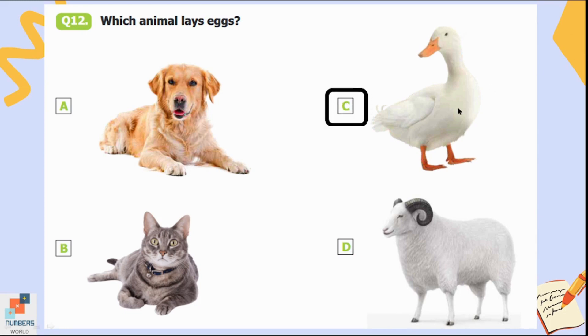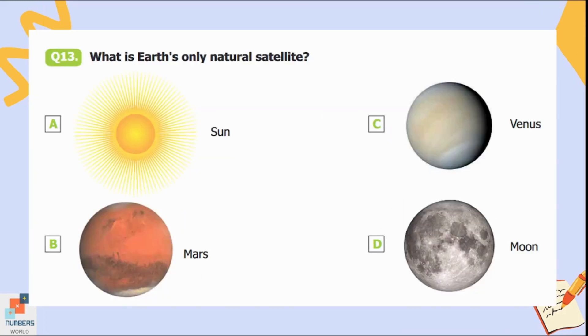Question number thirteen: What is Earth's only natural satellite? Sun, Mars, Venus, or Moon. Mars and Venus are planets, Sun is a star, and Moon is the only natural satellite of Earth which revolves around the Earth. So option D is the correct answer.